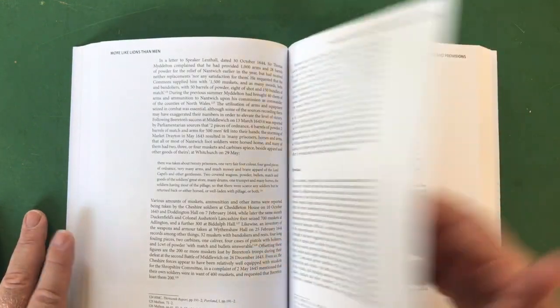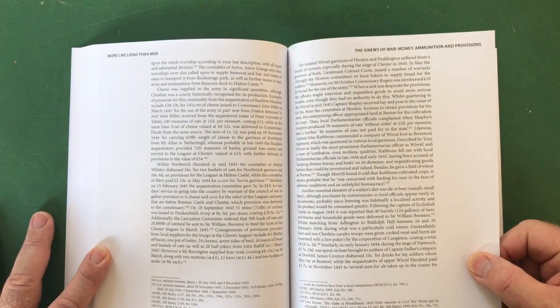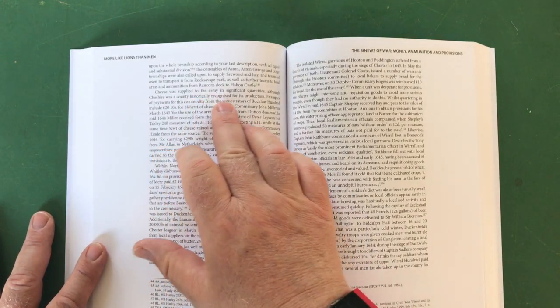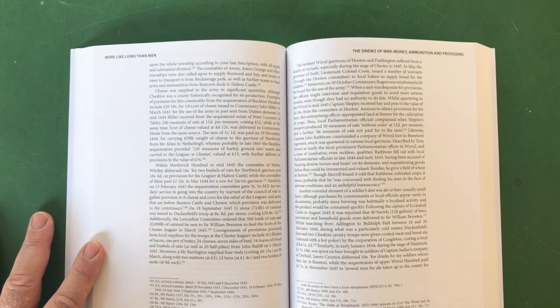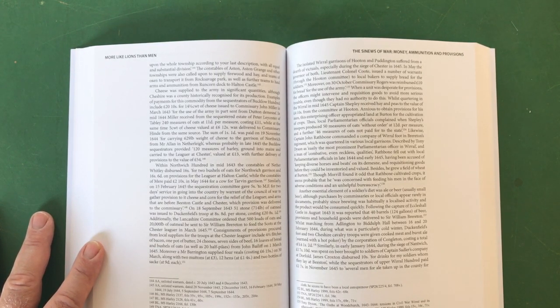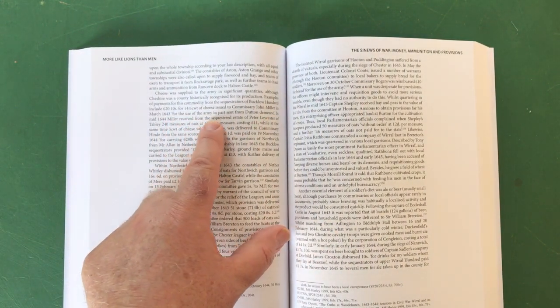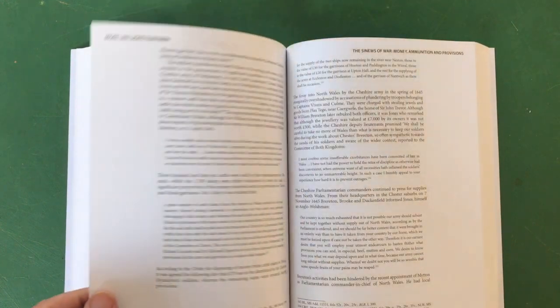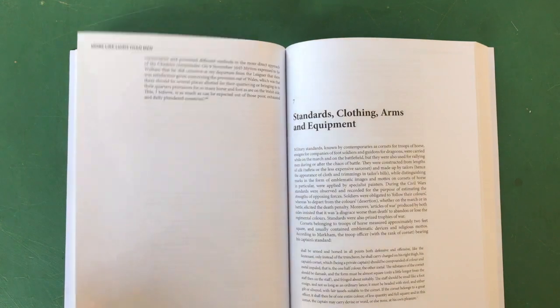And it persisted as well onto the Wars of the League of Augsburg through the wars against Marlborough and so on. A fascinating period of history. So ammunition, provisions - lots of stuff about provisions. Again I love this stuff: cheese! Cheese was supplied to the army in significant quantities although Cheshire was historically recognized for its production. Examples of payments for this commodity from the sequestrators of Bucklow Hundred include £20 10 shillings for 14 and a half hundredweight of cheese issued to Commissary John Miller in March 1643 for the use of the army in part sent from Dutton demesne. Wow! Cheese! Wallace and Gromit would be proud of this part of the book. This is fantastic stuff.